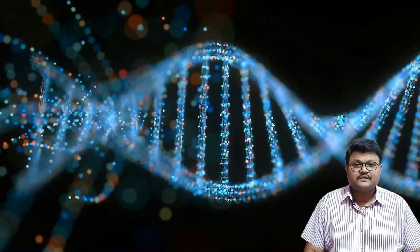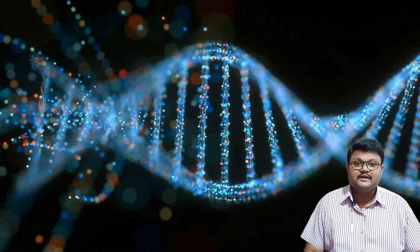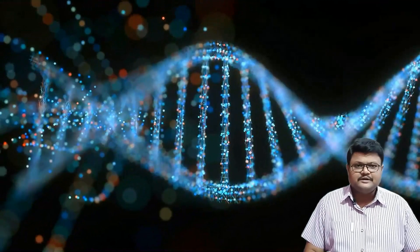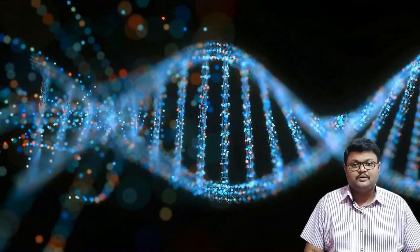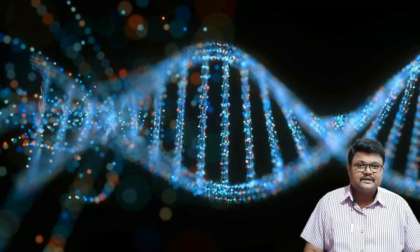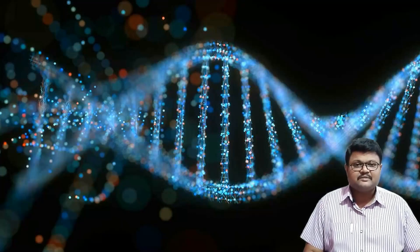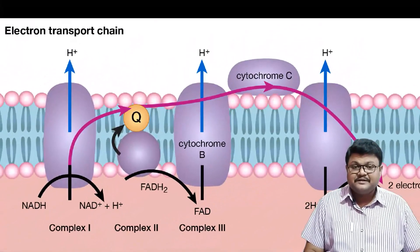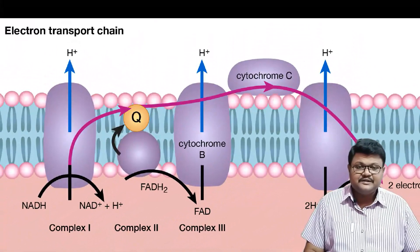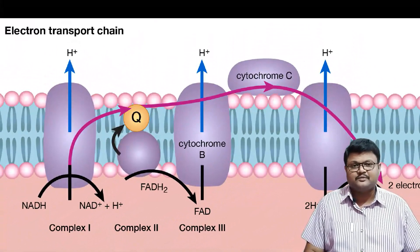Second, phosphorus is present in our DNA and RNA — in short, in our nucleic acids. We already studied the presence of phosphorus in DNA in PUC second year chapter 6, molecular basis of inheritance, in brief. Third, phosphorus is present in the cellular transport systems too.